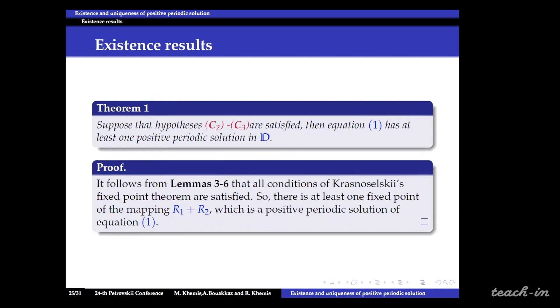So as a result from the previous Lemmas 3 to 6, we conclude that all conditions of Krasnowski's fixed point theorem are satisfied, so the operator R1 plus R2 admits at least one fixed point which is the positive periodic solution of our equation 1.